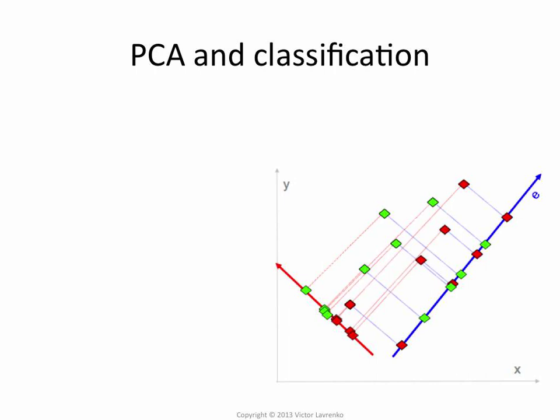Now if you picked a different dimension — say a dimension like that — the data actually becomes fully separable. But PCA will not give that to you. PCA will not pick that dimension because it doesn't see the colors. It only sees where the data points are in space and looks for variance.